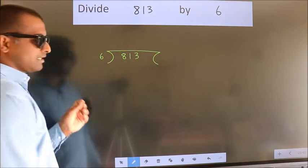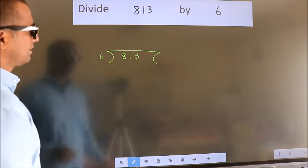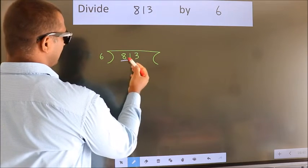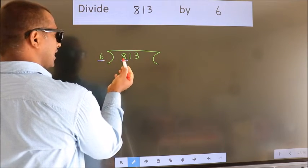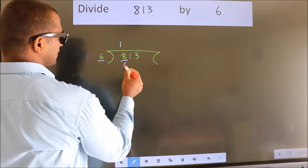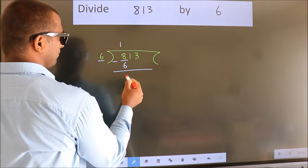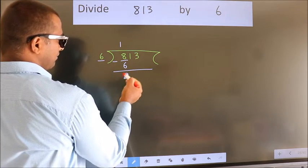This is your step 1. Next, here we have 8, here 6. A number close to 8 in the 6 table is 6 times 1, which is 6. Now, we should subtract. We get 2. After this,